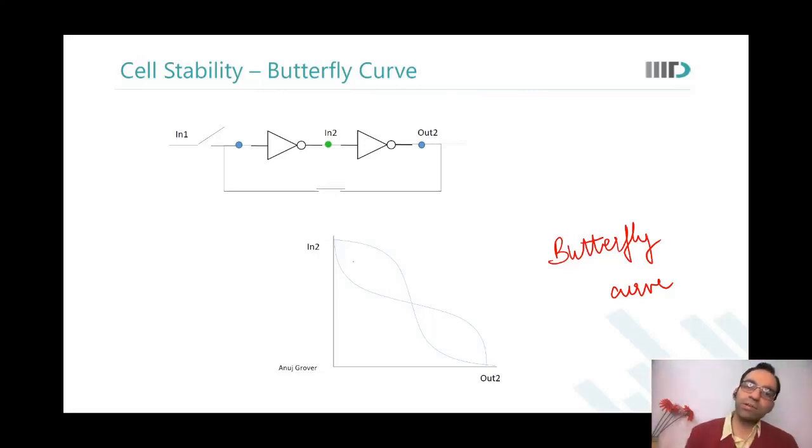Why is this called as a butterfly? It appears like two wings of a butterfly. So in this butterfly curve, now we say that we want to do some noise analysis.